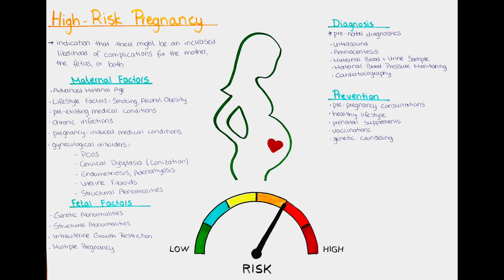What is the prognosis of a high-risk pregnancy? The prognosis can vary depending on the specific factors involved and how well they are managed. With proper medical care and close monitoring, many high-risk pregnancies can have positive outcomes and resolve without complication for the mother or the baby. However, there may be an increased risk of complications such as preterm birth, gestational diabetes, pre-eclampsia, cesarean delivery, or stillbirth.